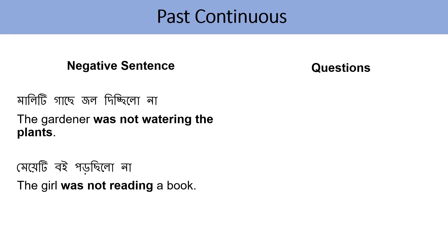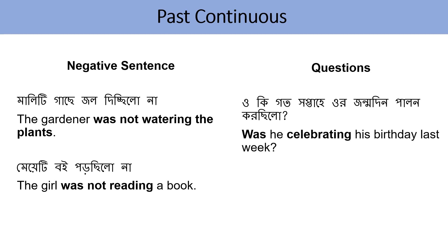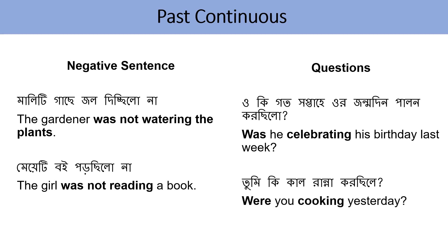Now if we want to form questions in Past Continuous: ও কি গত সপ্তাহে তার জন্মদিন পালন করছিল? — Was he celebrating his birthday last week? Notice 'was' comes first in the question. Questions start with 'was', 'were', 'where', 'when'. তুমি কি কাল রান্না করছিলে? — Were you cooking yesterday? The question starts with 'were'.